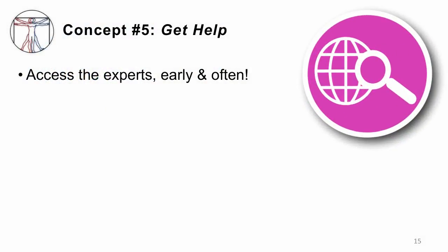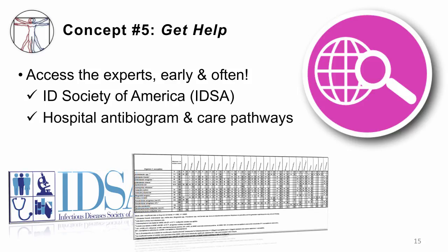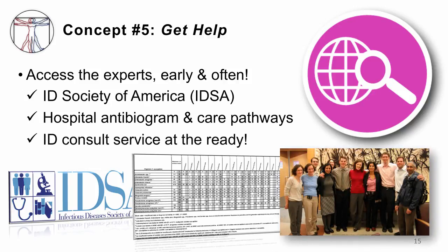Concept number five: you're not alone. Please be willing to access the experts — early and often. You should have a very clear idea of how to get help and who to talk to. Online, we have the Infectious Diseases Society of America, which has wonderful guidelines for a whole variety of infectious diseases. Every hospital also has an antibiogram — a chart showing bugs and drugs and susceptibility data to guide your drug choices. There are care pathways for bloodstream infection, urinary tract infection, meningitis, and more. And finally, there's always ID consultation. ID consultants know all of internal medicine or pediatrics, and they understand the immune system, its interplay with microbes, and how to dose antibiotics. Please consult them — they are wonderful teachers, warm, knowledgeable, and eager to help you make the right choice.